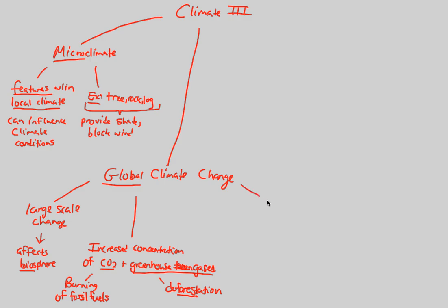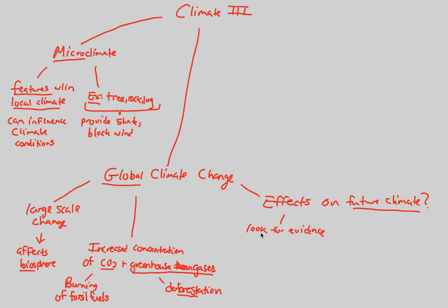In terms of global climate change, we have to understand whether there are effects on the future climate. As an ecologist, you have to look for evidence — that's a big idea. We have to look for evidence of changes in the fossil record. The fossil record has been mentioned before in Bio 1, and it's a very strong component of concrete, direct evidence. In addition, ecologists try to make predictions based off of information they can achieve through this fossil record.